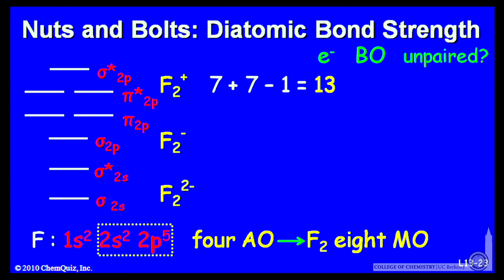So fluorine plus ionized species, seven electrons from each fluorine minus 1 gives us 13, a plus 1 charge F2 molecule. Let's put those 13 electrons in. And now I put them in spin parallel first before I pair them. Thirteen electrons for F2 plus.